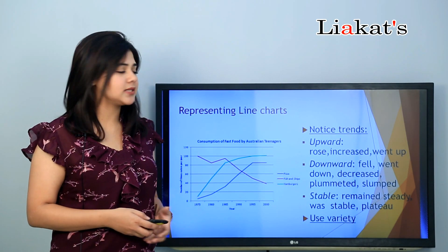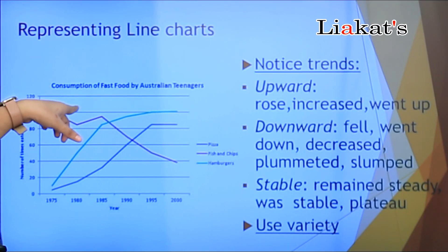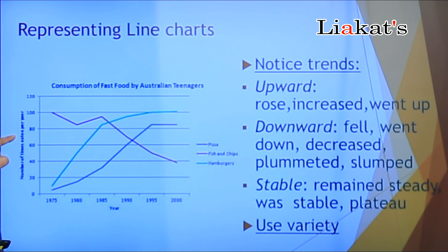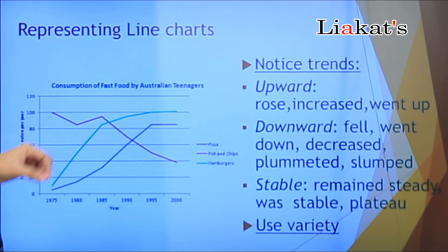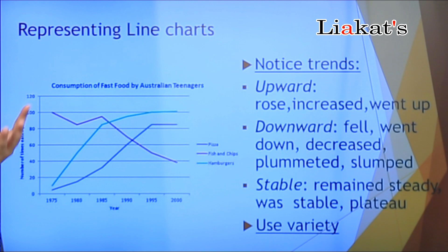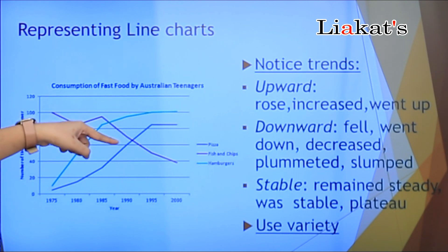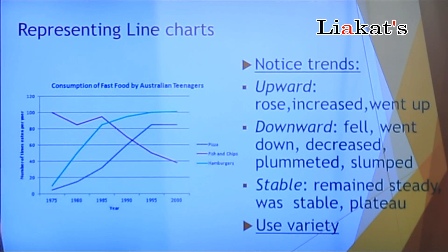Let's see how we can represent line charts. In this line chart, the subject is given. On the X-axis we can see the years, ranging from 1975 to 2000. The Y-axis shows number of times eaten per year, from 0 to 120. The data covers Australian teenagers and the fast food they consume. There are three categories: the blue line is for pizza, the red line is for fish and chips, and the green line is for hamburgers. We need to remember which line represents which food — mixing them up would be wrong.